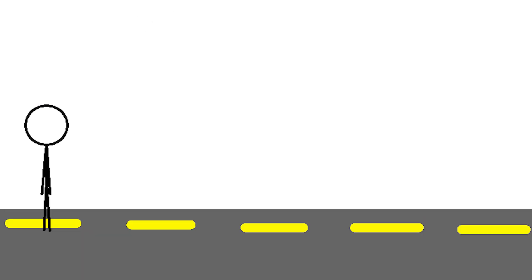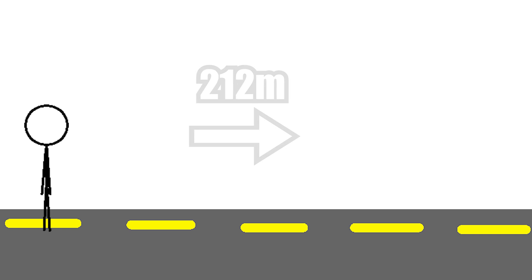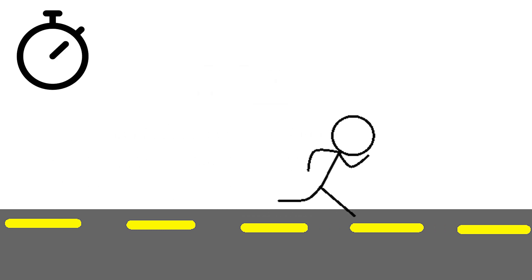Let's talk about speed. Now let's say I'm right here and I'm going to run along this road for around 212 meters. We can calculate how fast my average speed is by timing how long it takes for me to run the full distance.